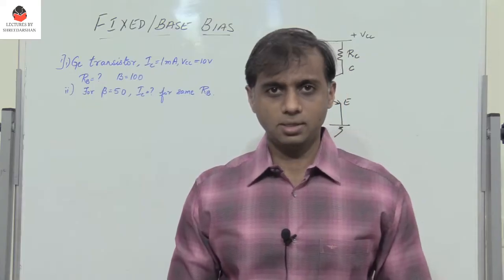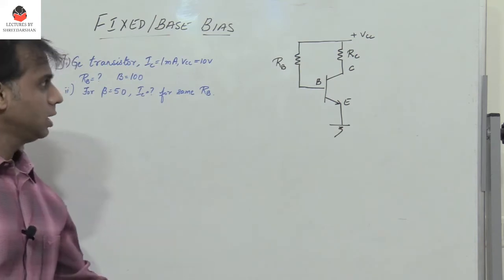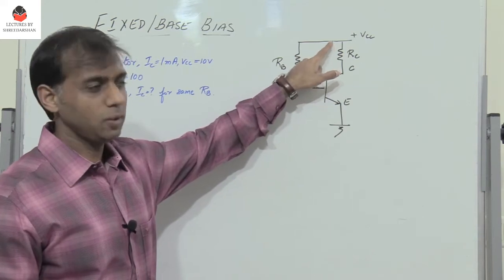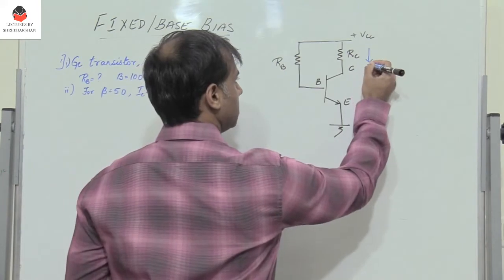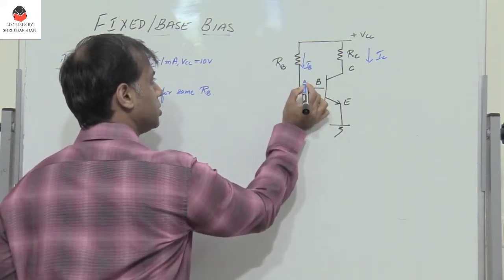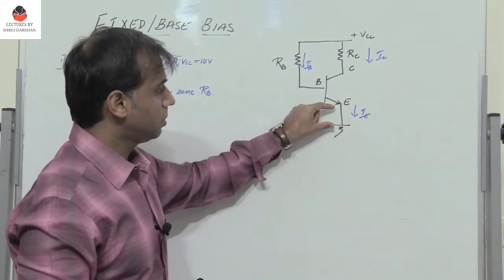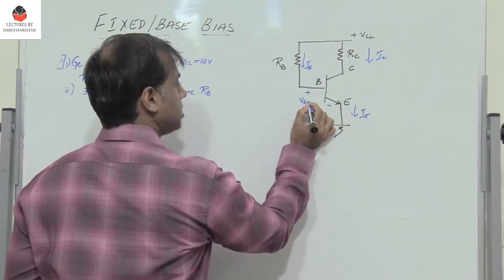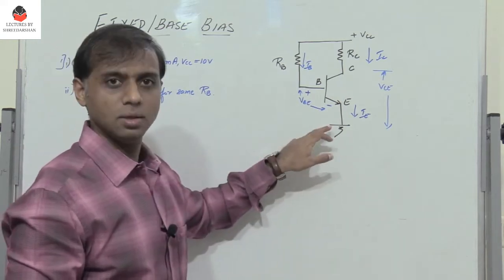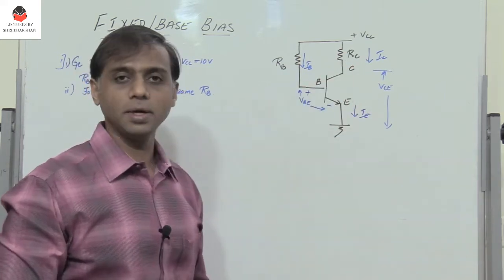In the previous video segments we have gone through the various BJT biasing techniques, and today we shall solve a few problems related to fixed or base bias. Just a brief recap — in fixed biasing, resistance RB is connected between the supply VCC and the base. The current through RC is IC, the current through RB is IB, and the emitter current is IE. VBE is the base-emitter voltage and VCE is the collector-emitter voltage. To find the operating point, we calculate VCE and IC.